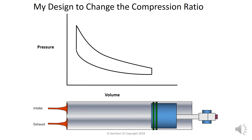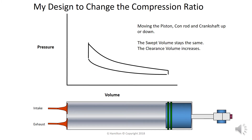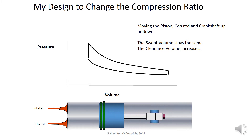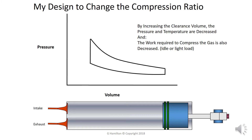My design of the compression ratio works by moving the conrod further down, or the piston further down - I've extended this section here and brought this one down. So by moving the piston, conrod, and crankshaft up and down, the swept volume stays the same and the clearance volume increases or decreases as the case may be. The piston goes up and down - I am effectively just moving the whole system down. At light load, by moving this piston down, this angle here isn't as much, so the work required to compress the gas is a lot less, and of course my power coming out is a lot less. If I wanted to increase it, this line would go up further and down further.